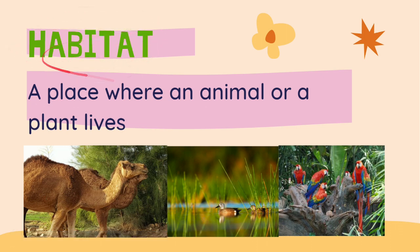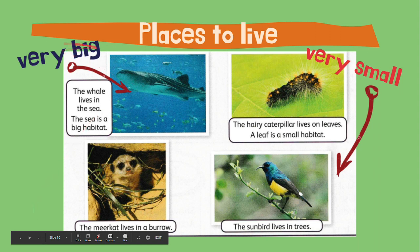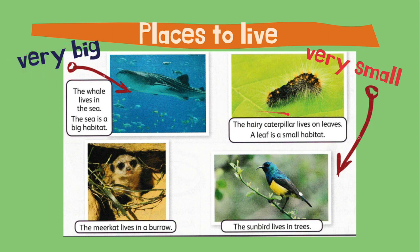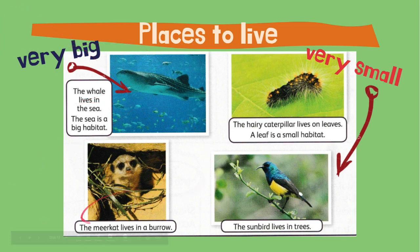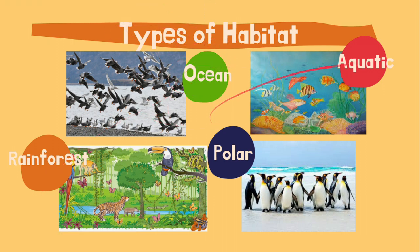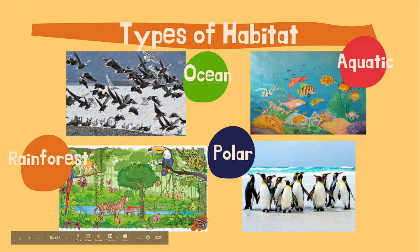Habitats can be very big or very small. Look at these pictures of some habitats. The whale lives in the sea — the sea is a big habitat. This hairy caterpillar lives on leaves — a leaf is a small habitat. The meerkat lives in a burrow, and the sunbird lives in trees. The area where a particular organism lives naturally is called its habitat. Some types of habitat include the ocean, aquatic, rainforest, polar, and a lot more. A good habitat must provide food, water, cover, space, and shelter for these animals.